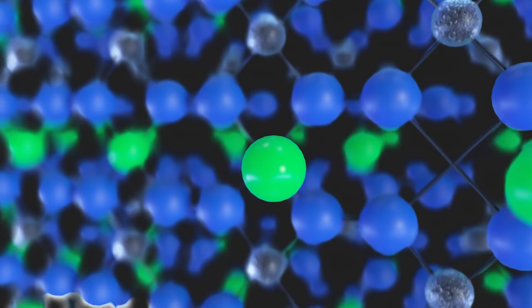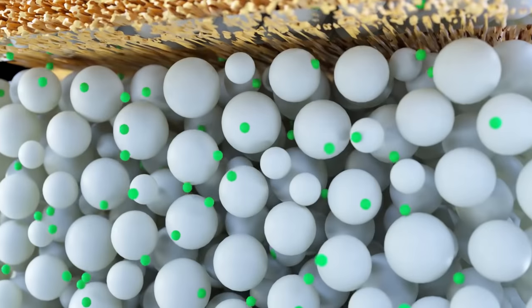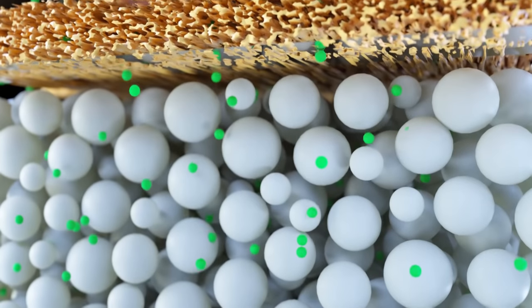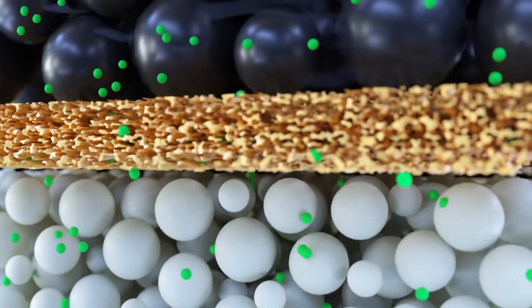As the battery charges, the lithium leaves the cathode particle and makes its way through the liquid electrolyte, passing through the pores in the separator on its way to the anode.